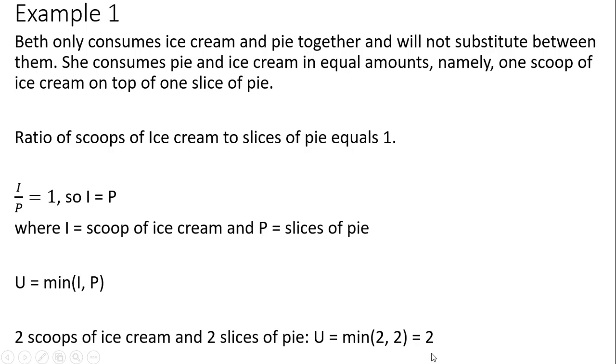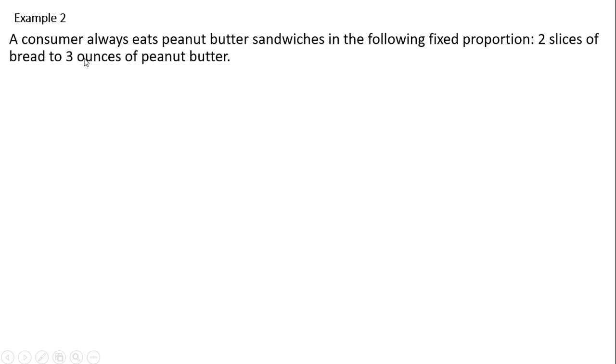All right. Example two. A consumer always eats peanut butter sandwiches in the following fixed proportion: two slices of bread to three ounces of peanut butter.